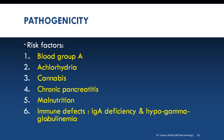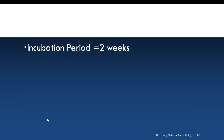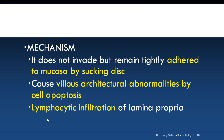Enhanced susceptibility to giardiasis is associated with blood group A, achlorhydria, cannabis ingestion, chronic pancreatitis, malnutrition, and immune defects like immunoglobulin A deficiency and hypogammaglobulinemia. The incubation period is approximately 2 weeks. The mechanism by which it causes diarrhea is not by invasion — it does not invade any tissue. Instead, it remains tightly adhered to the intestinal epithelium by means of the sucking disc, which alters villus architecture through cell apoptosis and lymphocytic infiltration, ultimately leading to malabsorption.